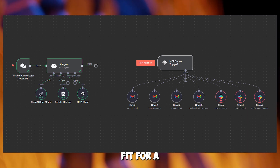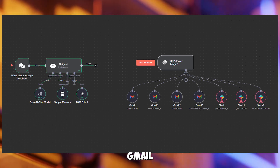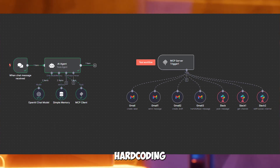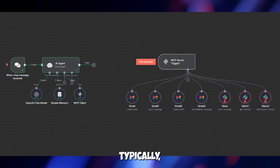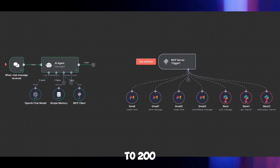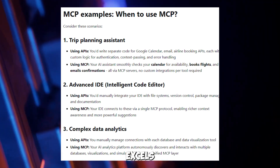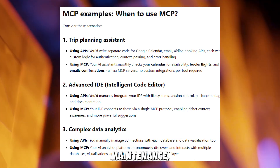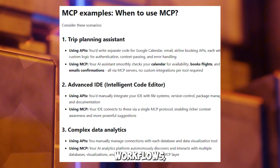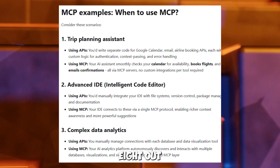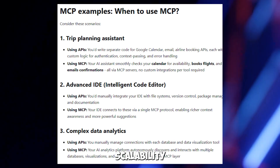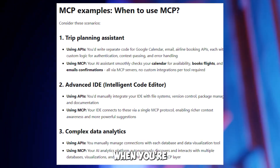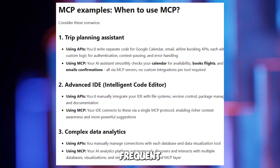MCP isn't always the best fit. For a single workflow with one Gmail action, like sending a daily report, hard coding a Gmail node is simpler and faster, avoiding the setup overhead and slight latency — typically 100 to 200 milliseconds of client-server communication. MCP excels in scalability and maintenance, scoring 9 out of 10 for handling multiple workflows, but requires more initial setup, 8 out of 10. Hard coding is quick to set up, 4 out of 10, but scores poorly for scalability and maintenance, 3 out of 10. MCP shines when you're managing multiple workflows or frequent API updates.